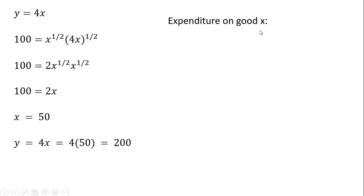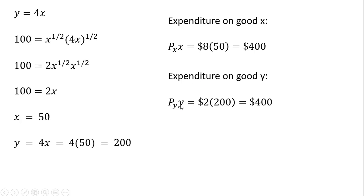The expenditure on good x is going to be the price of good x times the number of units purchased, 50. So we said the price of good x is $8, so 8 times 50 is 400. And the expenditure on good y is the price of good y times units of good y, $2 times 200 is $400. So the minimum expenditure necessary to obtain a utility of 100 is going to be 400 plus 400, or $800.